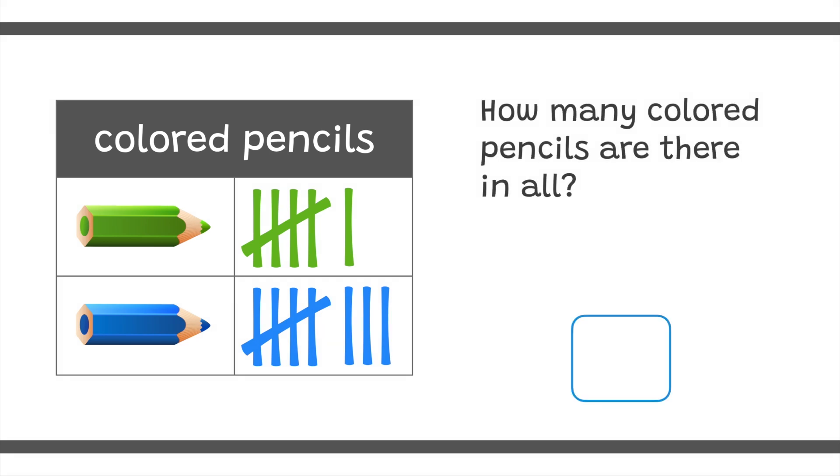I wonder how many colored pencils are there in all. Let's count all the tallies. Here are five green pencils, plus five blue pencils, plus the extra one, two, three, four. Five plus five is ten, plus four more is fourteen. So there are fourteen colored pencils in all.